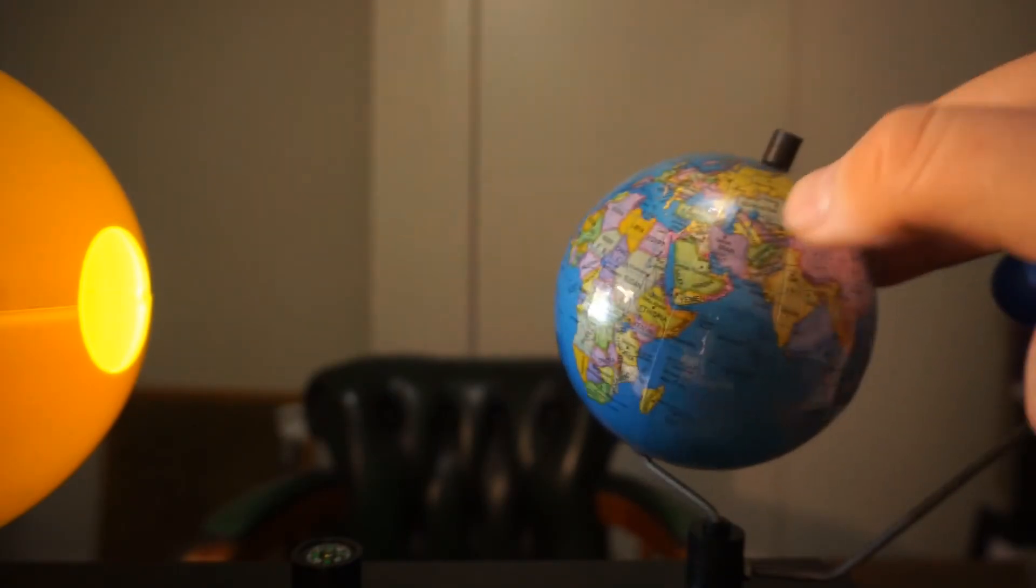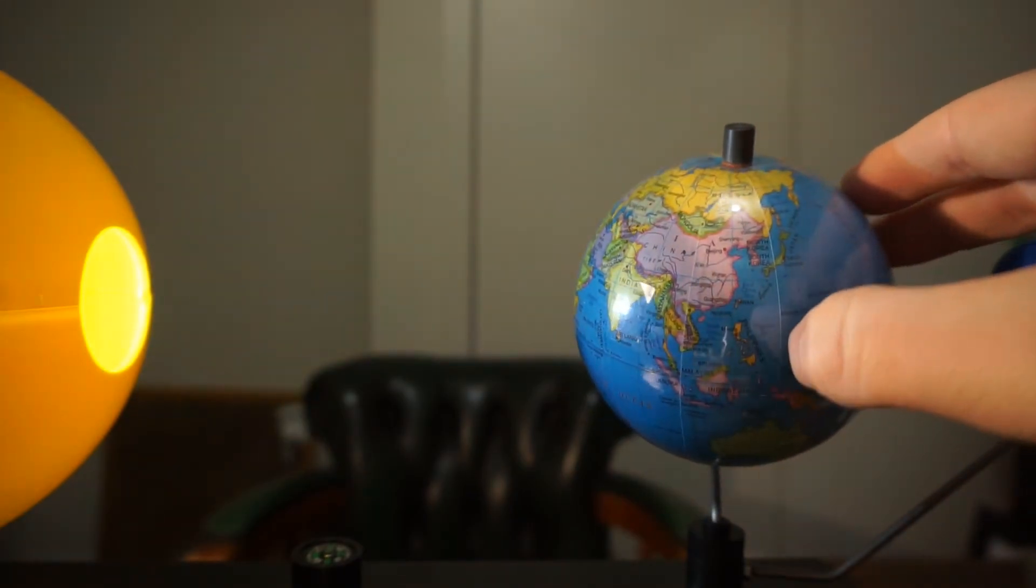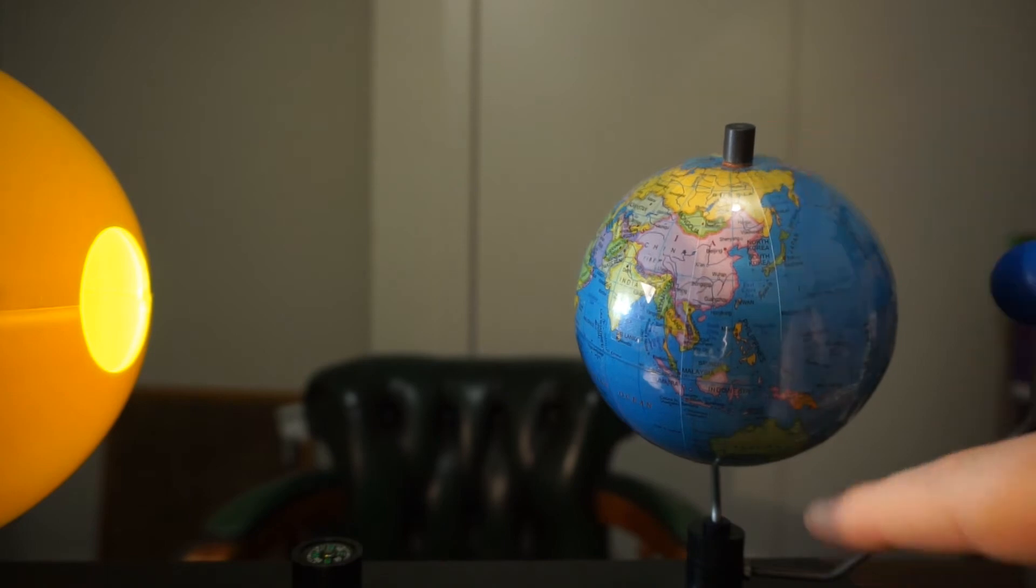And this includes South America, this includes parts of Africa, and it also includes parts of Asia as well. And the North and South Poles don't receive this direct sunlight, and so those are obviously the coldest places on Earth.